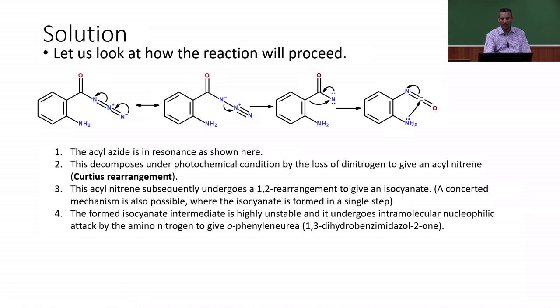Once the isocyanate is formed, we have a nucleophilic nitrogen present in the compound itself. The nucleophilic nitrogen attacks the isocyanate's carbon and we end up with the ortho phenylene urea or the 1,3-dihydrobenzimidazol-2-one. This five-membered ring product is actually formed.